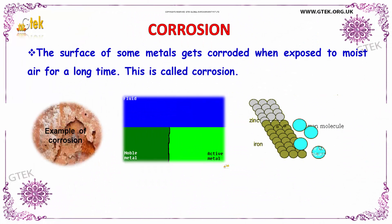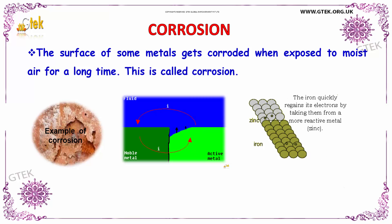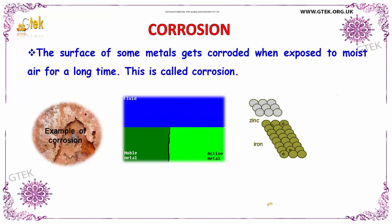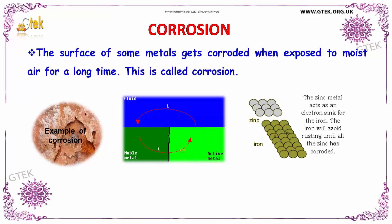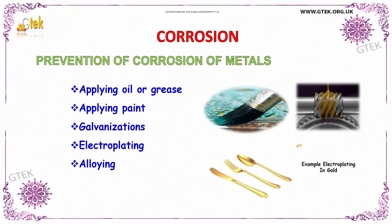Now we will see about corrosion. The surface of some metals gets corroded when exposed to moist air for a long time; this process is called corrosion. To prevent corrosion of metals, we can apply oil or grease, or paint over the metal. Galvanization, electroplating, and alloying are also considered preventive mechanisms against corrosion.